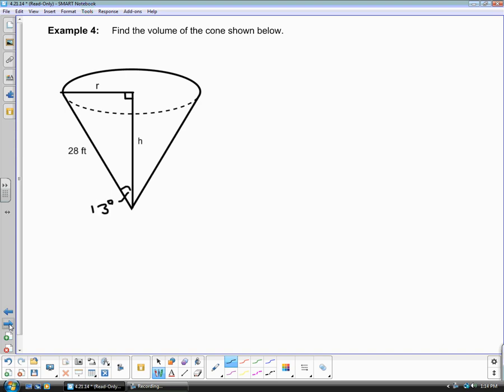Example number four, find the volume of the cone shown below. Again, we do not have enough information to figure out your radius and your height using Pythagorean theorem. So we need to pull this triangle out and again use trig. If you want, you can pause the video and try this on your own.